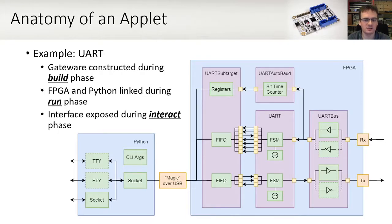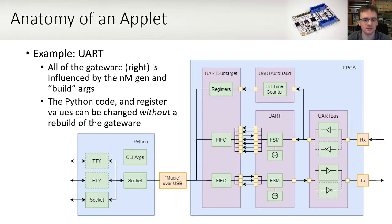The gateway constructed during the build phase covers everything on the right-hand side. The FPGA and Python are linked together during the run phase and the interface is exposed to the wider world during the interact phase — that's one of the three components on the left, depending on the command line arguments. The gateway sources are in the applet file and potentially in other imported modules as well. Common blocks are abstracted away, for example the UART. Changes to sources may trigger a rebuild of the gateway. Even so, the build times are measured in seconds. Python code can be changed without any rebuild.